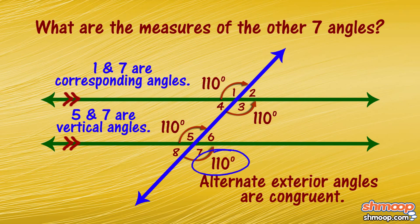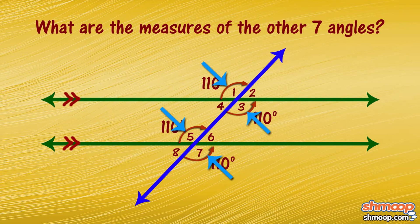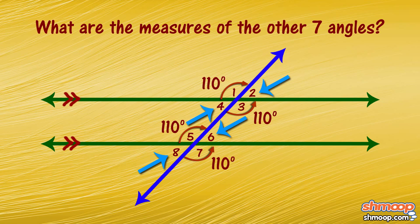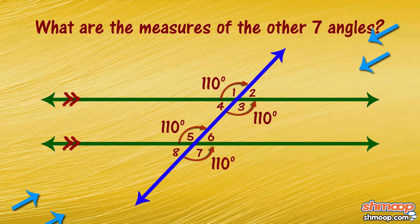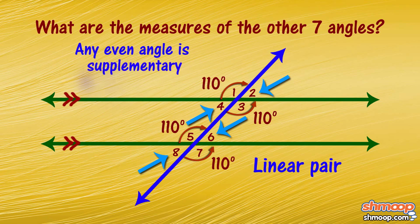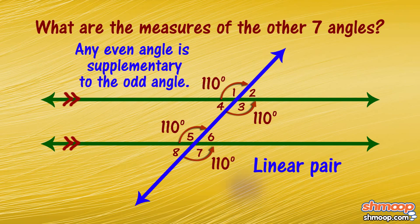Those are all the odd angles, but what about the evens? We know that a straight angle, or a line, has 180 degrees. Since any even angle makes a linear pair with an odd angle, any even angle is supplementary to an odd angle. That means the even angles have a measure of 180 minus 110, or 70 degrees.